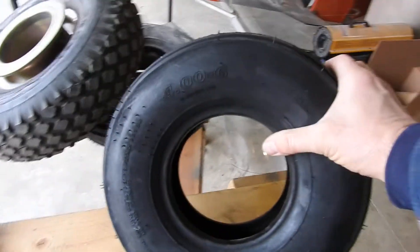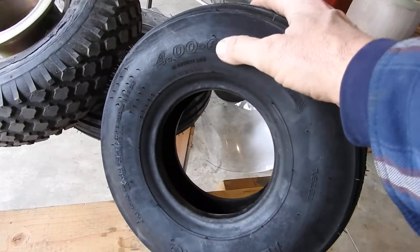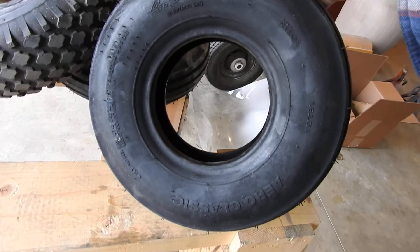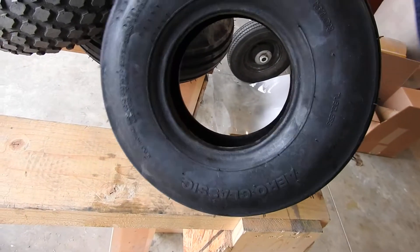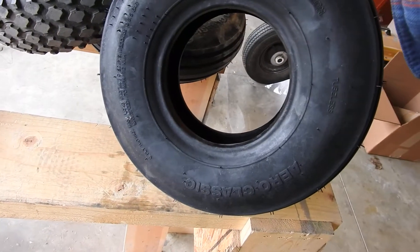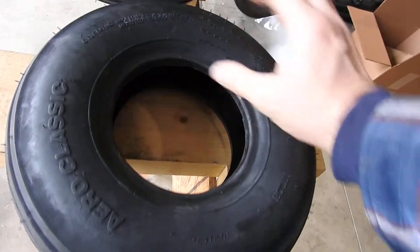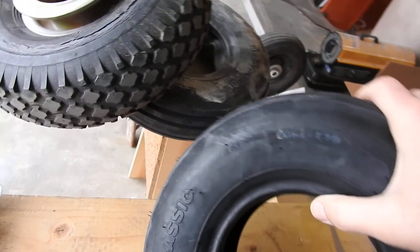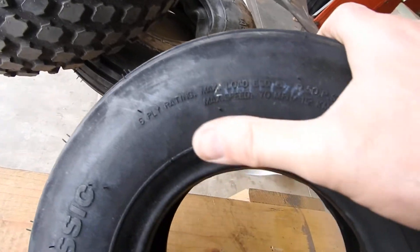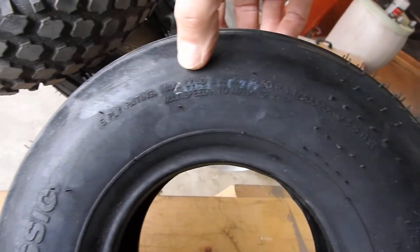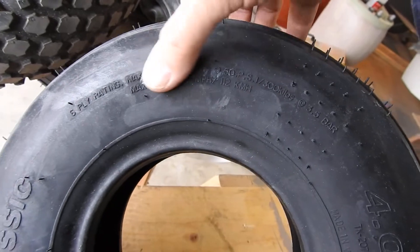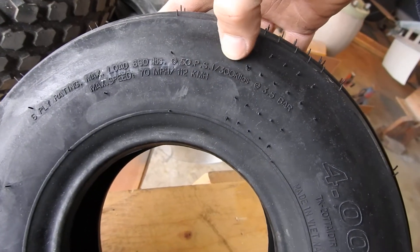Well these are what they refer to as an Aero Classic. Their size is 406. They're for a 4 inch wide tire, 6 inch rim. And these are also 6 ply. I don't know if you can read it, but it says here, 6 ply rating. Maximum load, 660 pounds per tire at 50 psi.